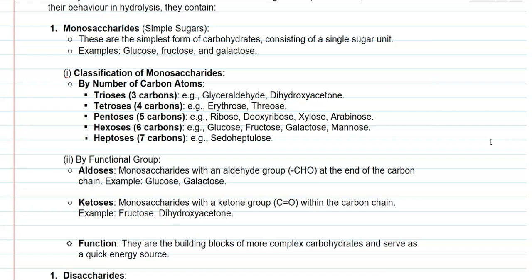Pentoses are monosaccharides that have five carbons. Examples include ribose and deoxyribose, which are commonly present in nucleic acids. Other examples include xylose and arabinose, which are commonly present in the plant cell wall.